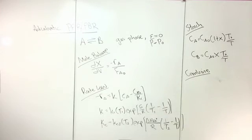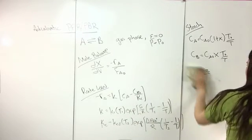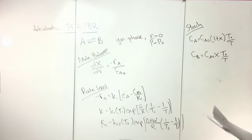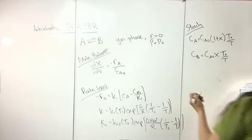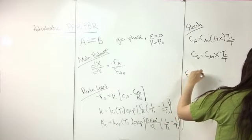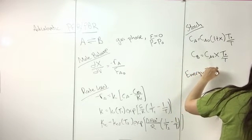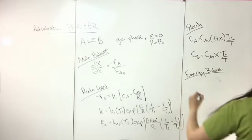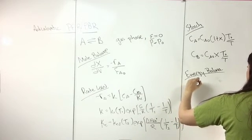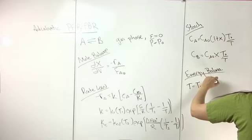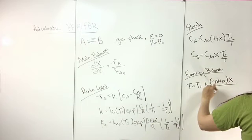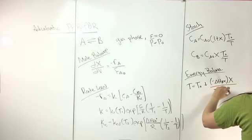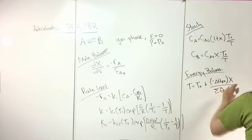Actually, let me do the energy balance first, since if you're solving numerically you might not even combine the equations. The energy balance gives T equals T0 plus the heat of reaction times X over the sum of theta_I C_PI. This equation assumes Q equals zero because it's adiabatic, work is zero, and delta C sub P equals zero.